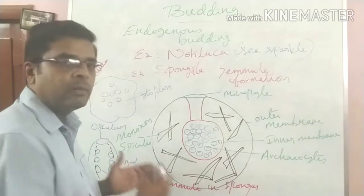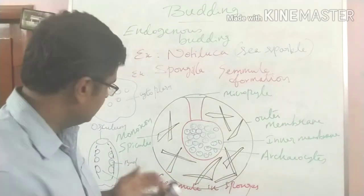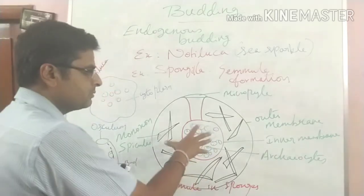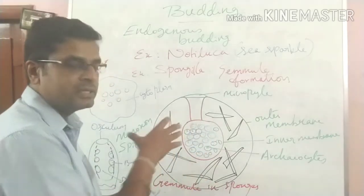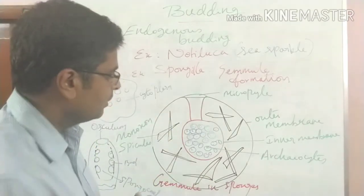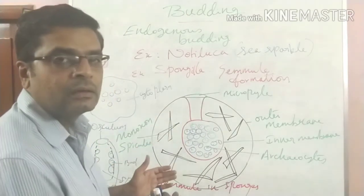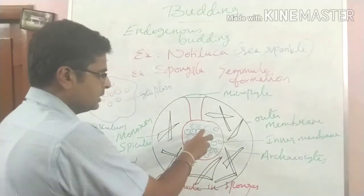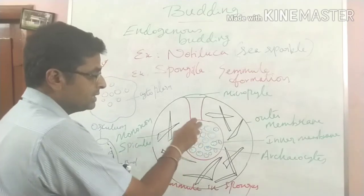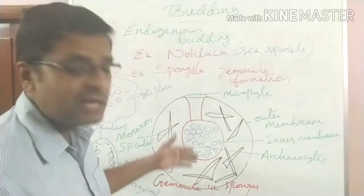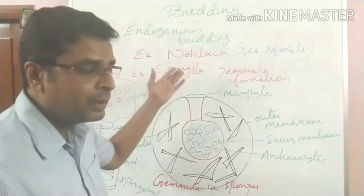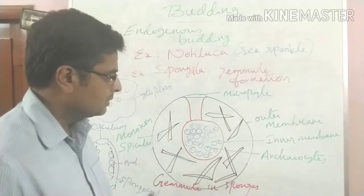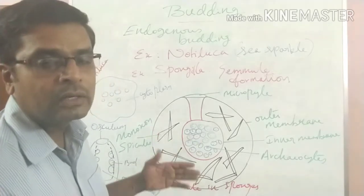During unfavorable conditions, the parent body will disintegrate, but the gemmules can withstand even adverse conditions. Once favorable conditions return, the gemmules begin to hatch. The archaeocytes inside the gemmule are considered stem cells, with the capacity to develop into any other kind of cell, including gametes or tissue formation.